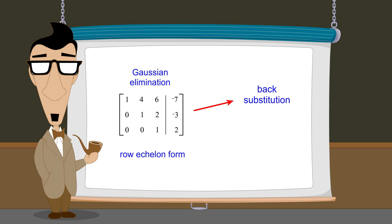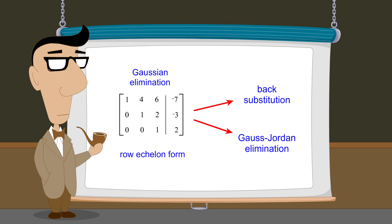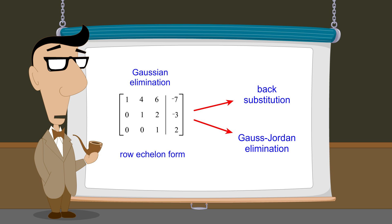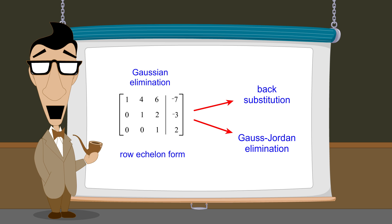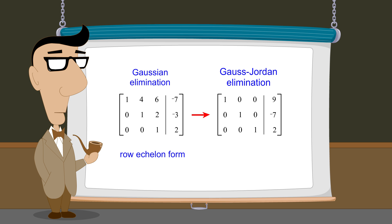Another choice, as we will see in this lecture, is to continue to reduce the augmented matrix through a process called Gauss-Jordan elimination. Gauss-Jordan elimination uses the same elementary row operations as Gaussian elimination, but the matrix is simplified to the point that the solutions can be determined directly from the matrix without having to convert it back into equations. Once a matrix has been reduced using Gauss-Jordan elimination, it is said to be in reduced row echelon form.